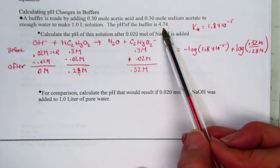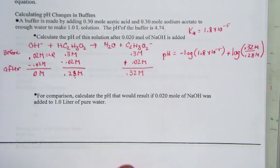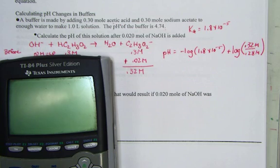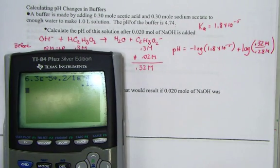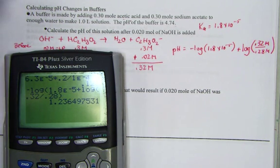Before we added the base, we were at 4.74. Let's see what's happened now. So let's hit negative log 1.8 E negative 5, plus the log of the ratio of 0.32 divided by 0.28. And that's not right.